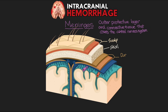The dura mater is a thick, durable membrane closest to the skull, consisting of two layers: the endosteal or outer meningeal layer, closest to the skull, and the inner meningeal layer, closest to the brain. There is a potential space between the skull and the dura mater — the dura normally sits right up against the skull, but this potential space is called the epidural space.